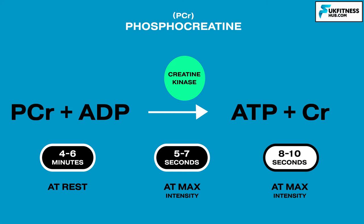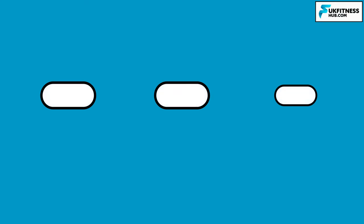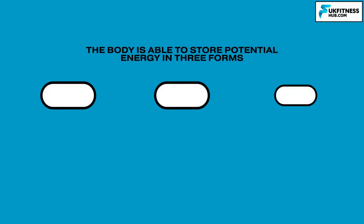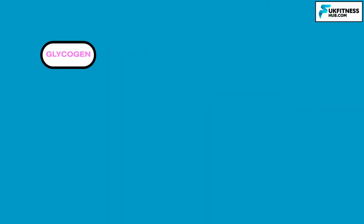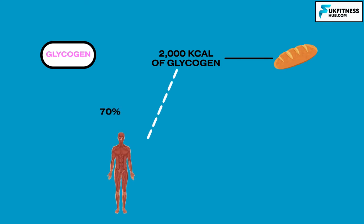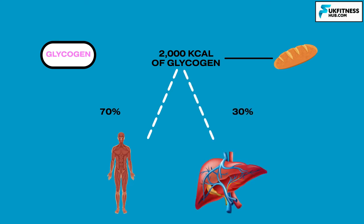The cells store enough PCR for around four to six minutes of energy production at rest and approximately five to seven seconds worth of energy at maximum intensity. Overall, the cells contain enough ATP and PCR for around eight to ten seconds of maximum intensity activity, such as sprinting. Other than tiny stores of ATP and PCR, the body is able to store potential energy in three forms: as glycogen, fat, and protein. The body is poor at storing glucose, and the average person can only store around 2,000 calories of glycogen obtained from eating carbohydrates. Approximately 70% of the body's glycogen is stored in skeletal muscle, with the remaining 30% stored in the liver. There is also glucose present in the bloodstream.